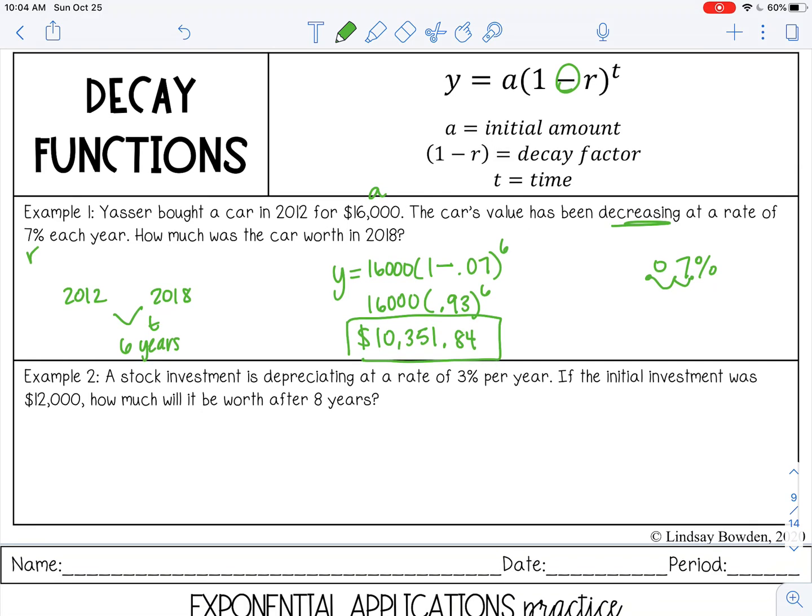Example number two: A stock investment is depreciating, that means it's getting smaller, at a rate of 3%, that's our R. If the initial investment was $12,000, that's our A. How much will it be worth in eight years? That's our T.